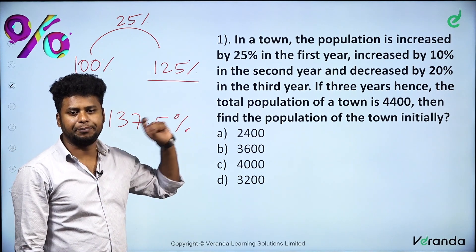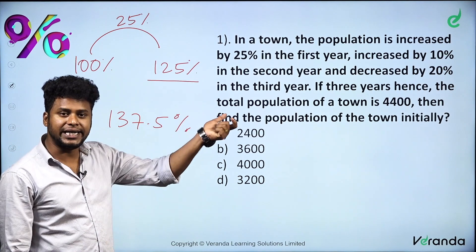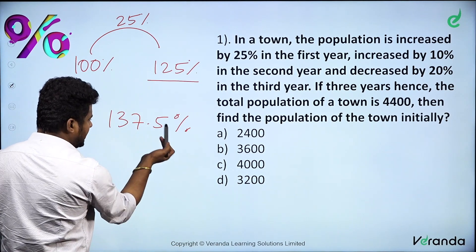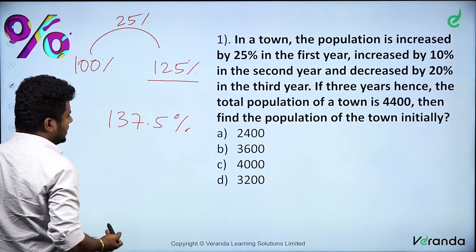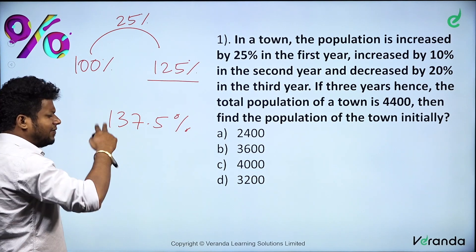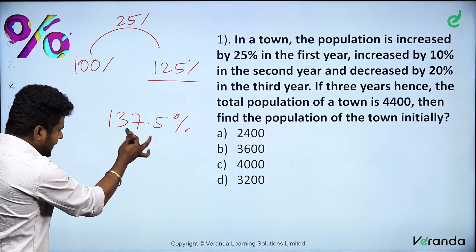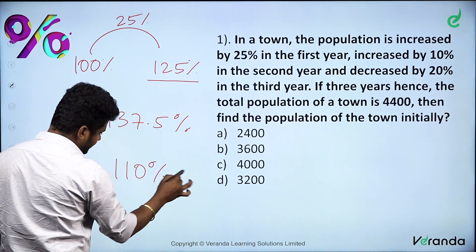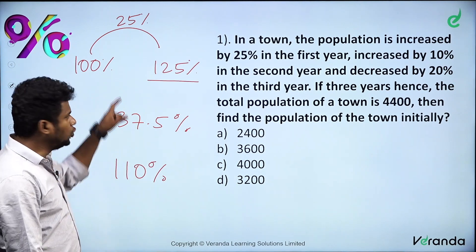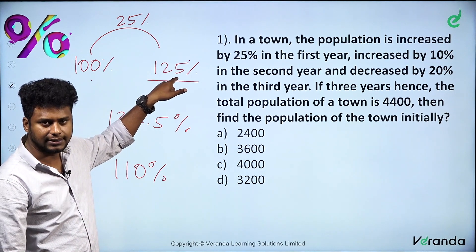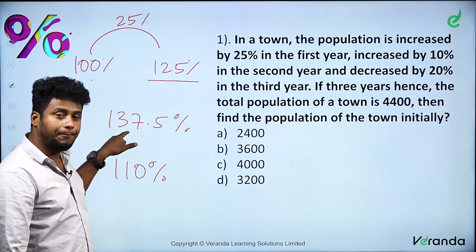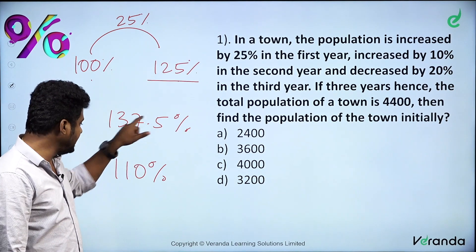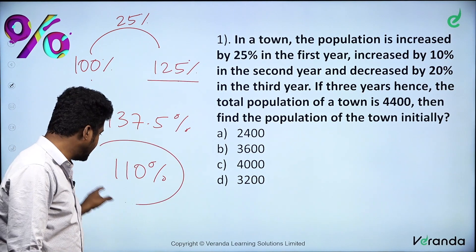After the 10% increase, we get 137.5%. Now, there is a 20% decrease. 20% of 137.5 is 27.5. So we subtract 27.5 from 137.5. That gives us 110%. But we need to check: 100% is the baseline. Even with 10% increase and 20% decrease, we get 110%.